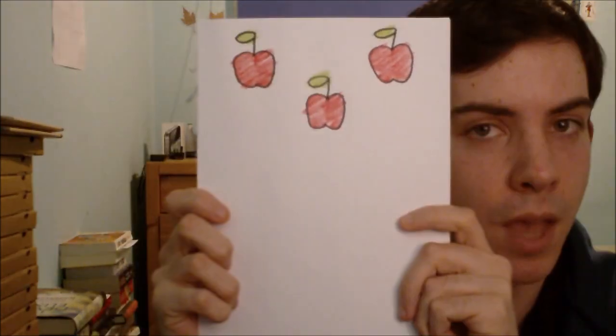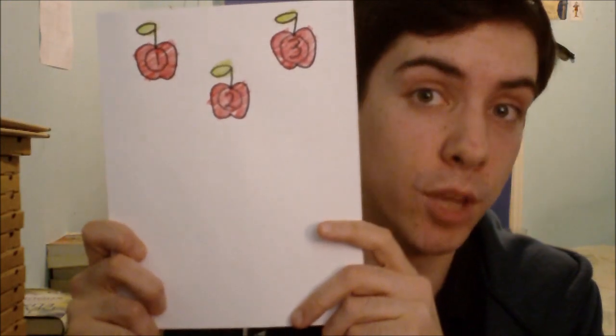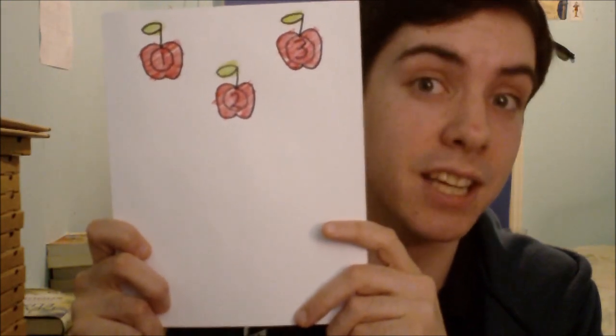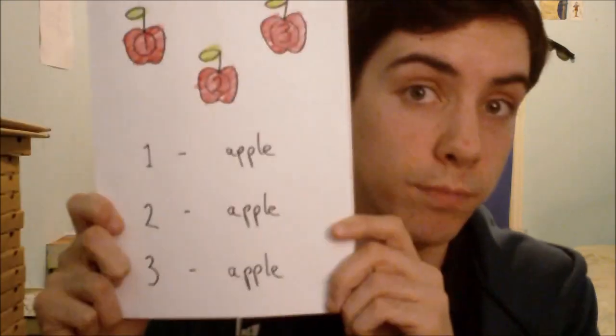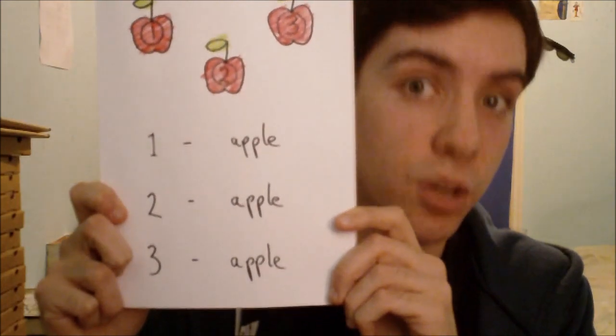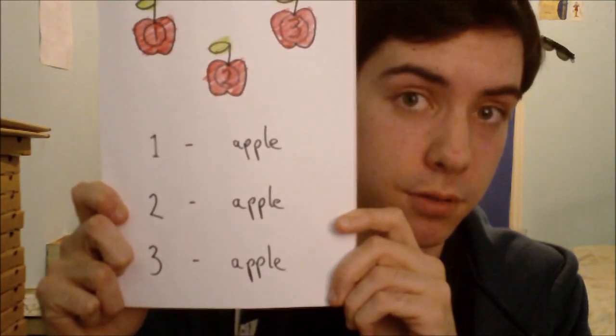Part one: how do we count? Let's pretend I have some badly drawn apples, which I do. How do I know how many apples I have? Well, I number them, like so, and then I put them into a list and count the length of that list, like so. We have three badly drawn apples.